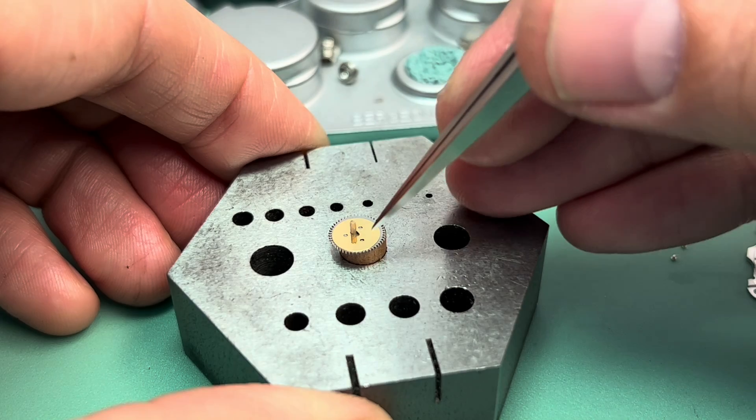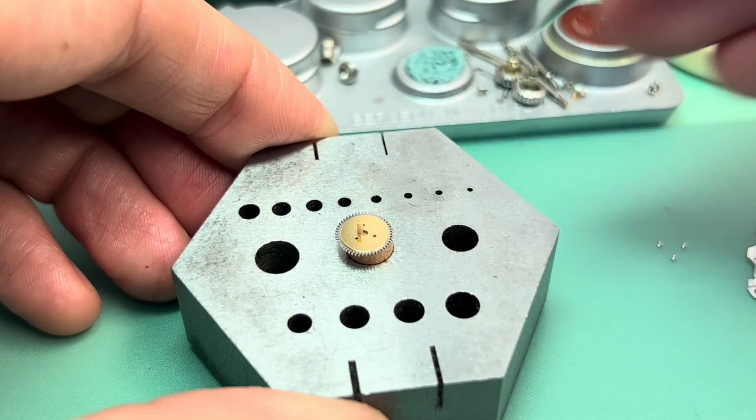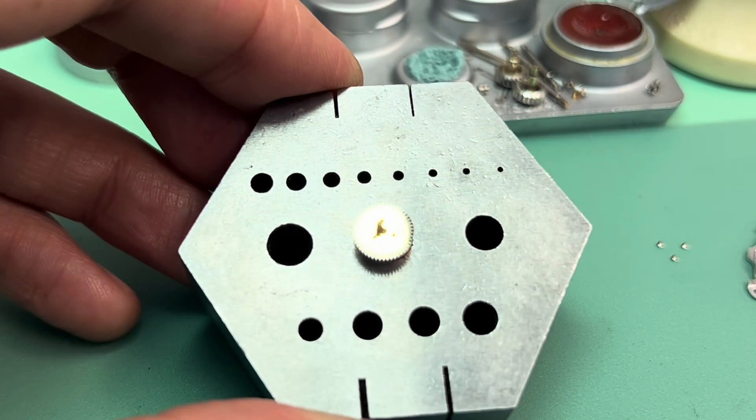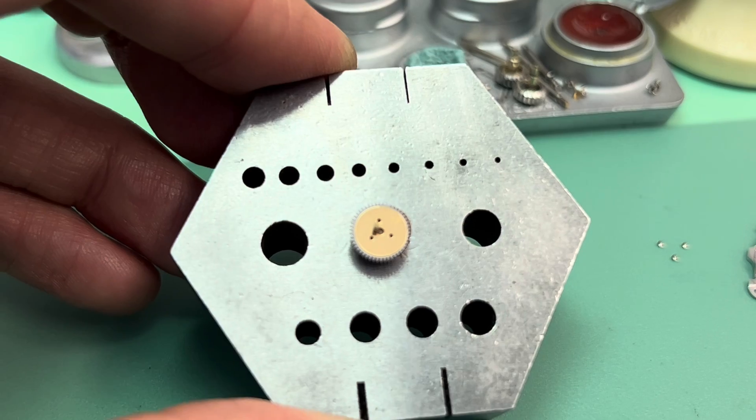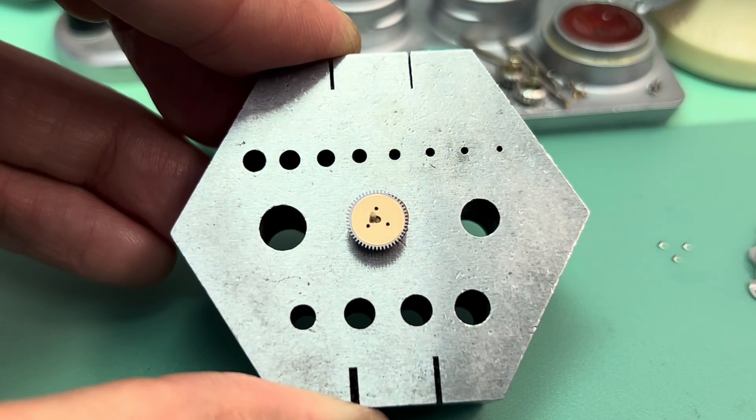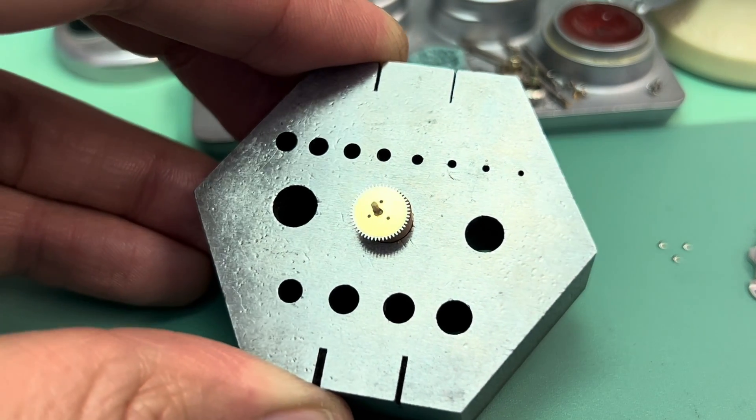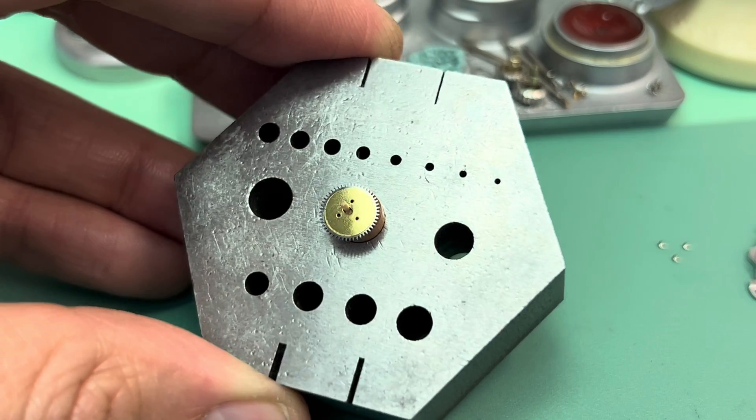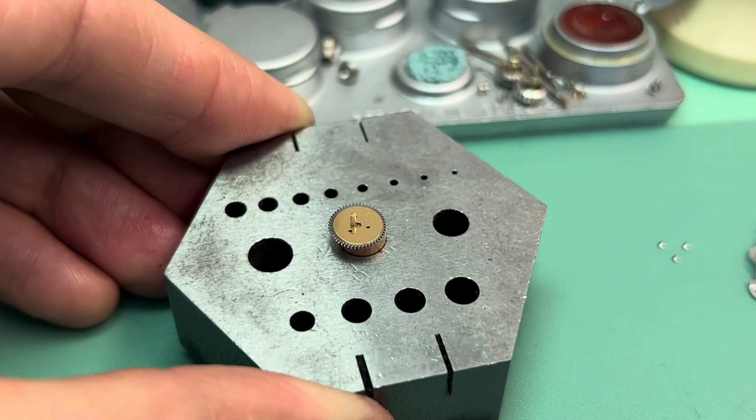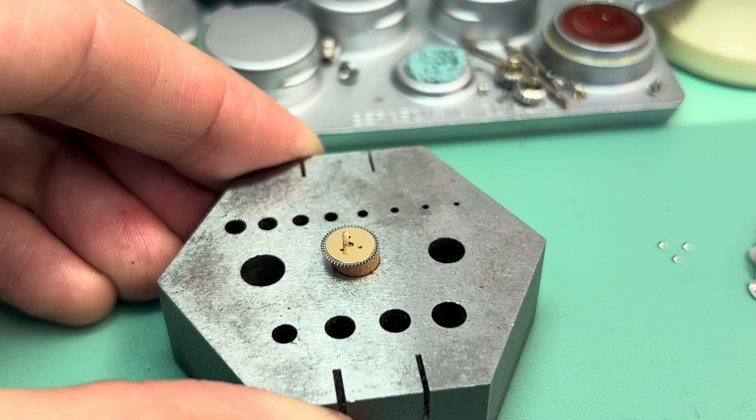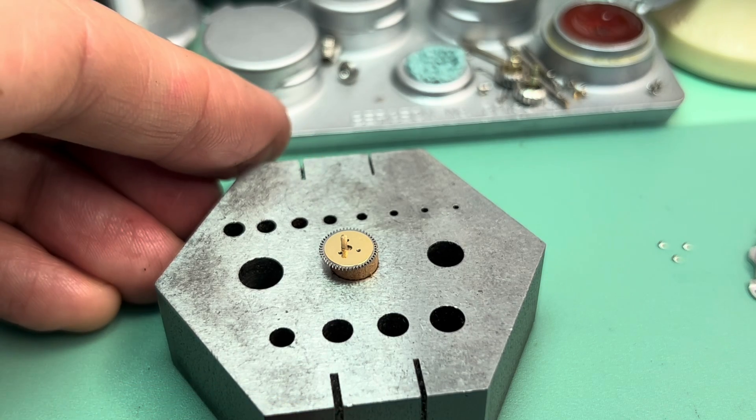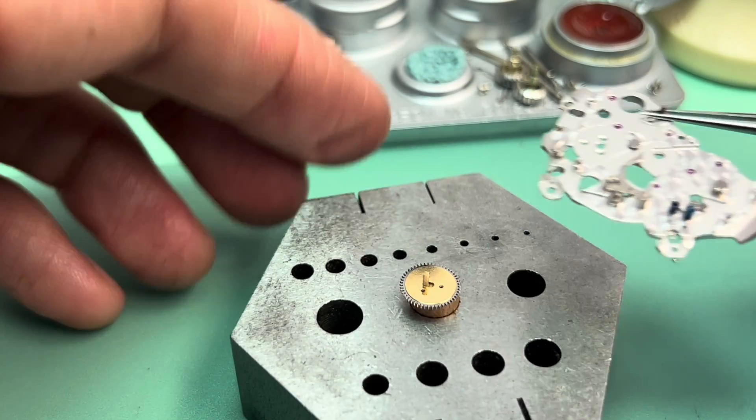So now we have to line up the three holes. Just like that. Now that hole in the center is kind of elongated. And that's for a reason.